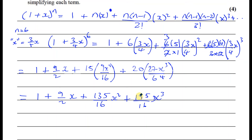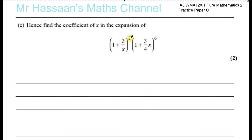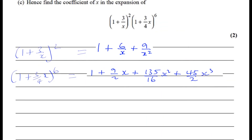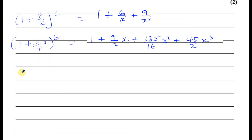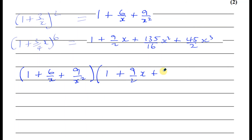Those are the simplified terms for Part B. Now Part C: find the coefficient of x in the expansion of (1 + 3/x)² × (1 + ¾x)⁶. We need to multiply the results from Parts A and B together: (1 + 6/x + 9/x²) × (1 + (9/2)x + (135/16)x² + (135/16)x³), then identify which products give an x term.